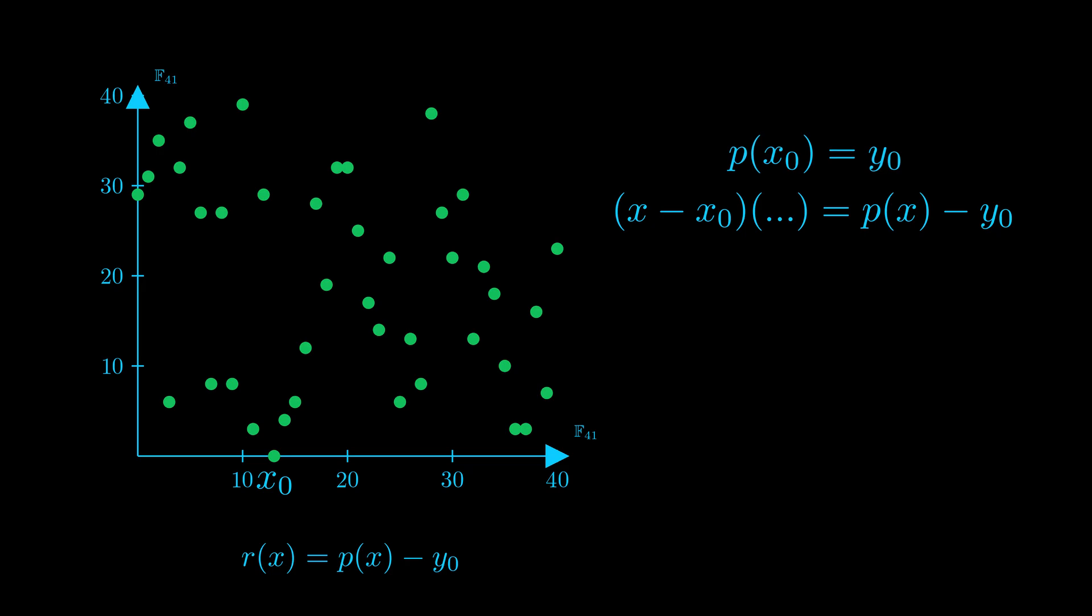So, if the opening is correct, the equation below has to be true. And therefore, there exists a quotient polynomial, which is the result of division r of x over x minus x0. This way, the committer can easily calculate the quotient. But, how does that help us with the verification of the whole process?